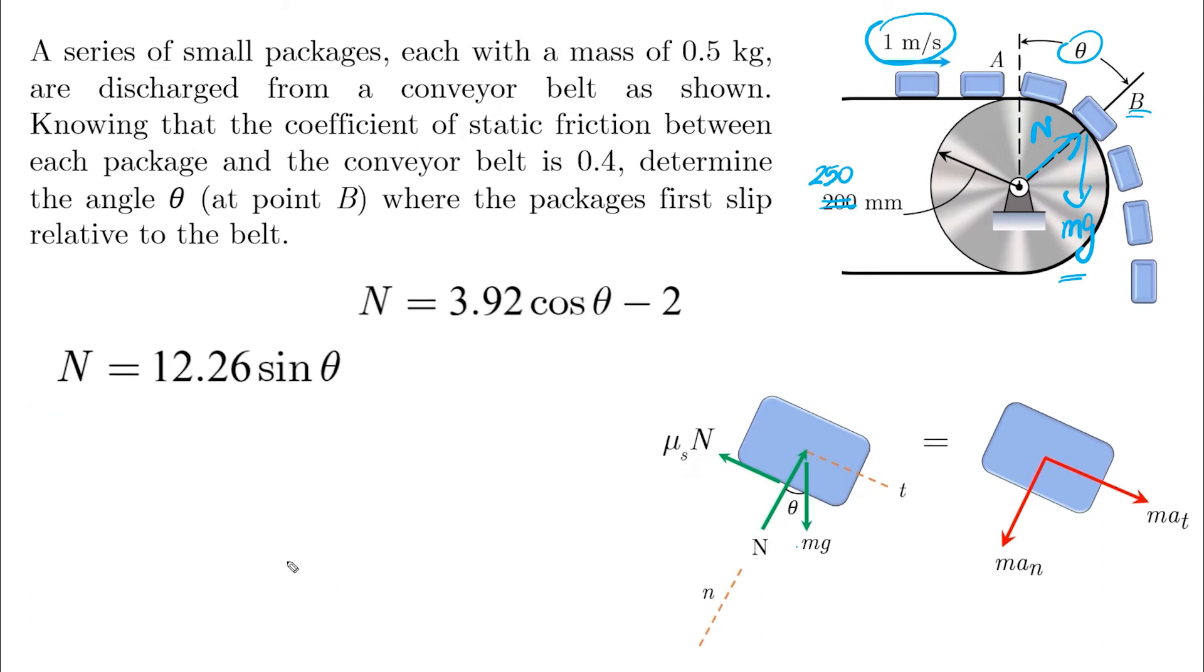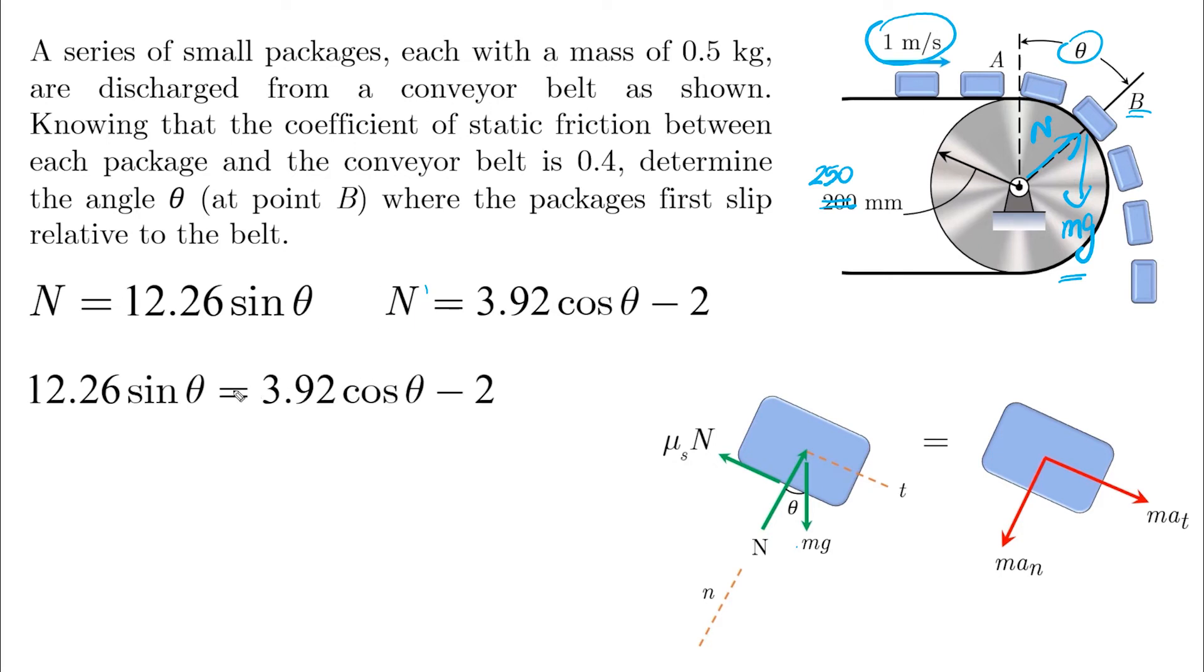So basically, we have two equations and two unknowns. And if we take N from this first equation and substitute it in the second, we will get this equation.